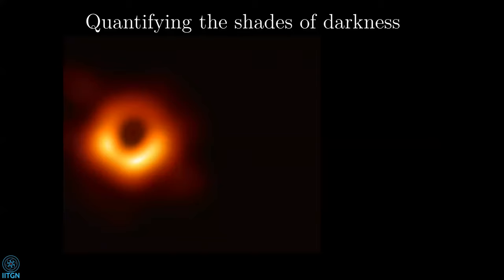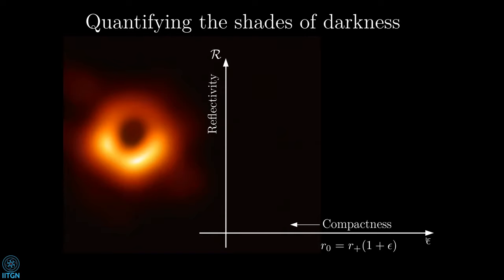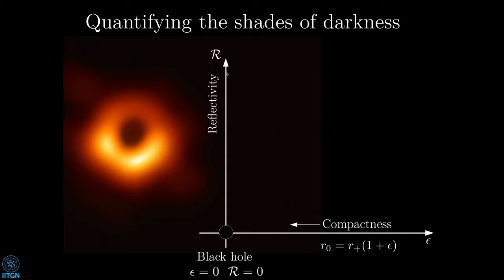The ways to quantify the black hole-ness of a given source are manifold, but there are at least two dimensions. One is checking the compactness — how compact the object is, parameterized by an effective radius R0 displaced from the black hole horizon by some quantity epsilon. The other dimension is the reflectivity, because classical black holes are perfect absorbers, but anything that is not a black hole has non-zero reflectivity. The reflectivity ranges between zero, the black hole case, and unity — a perfect reflector. For example, perfect-fluid neutron stars do not absorb gravitational waves at all, so they sit at reflectivity equal to one.